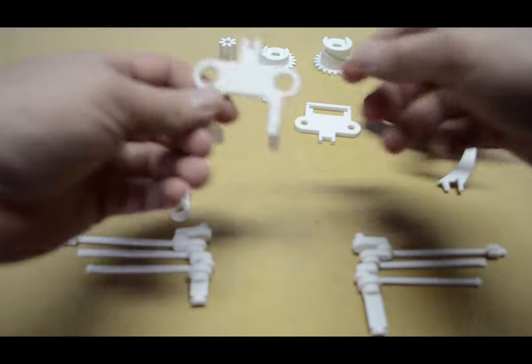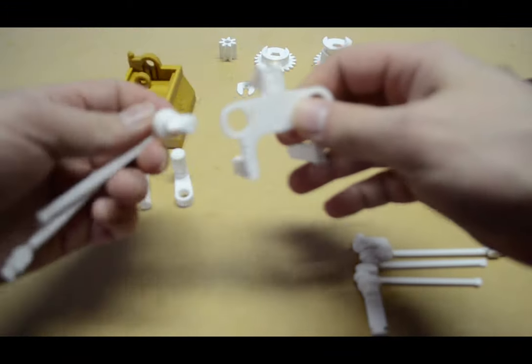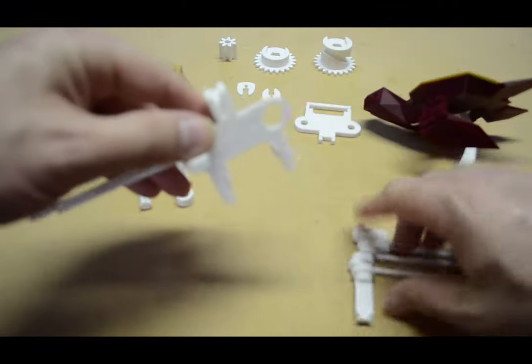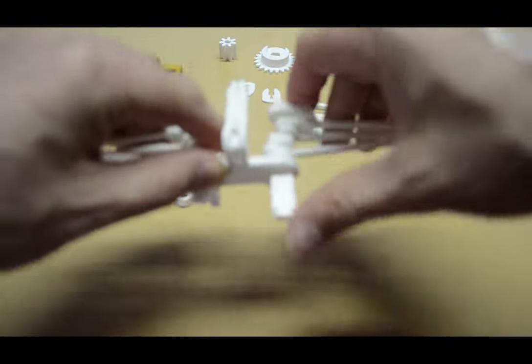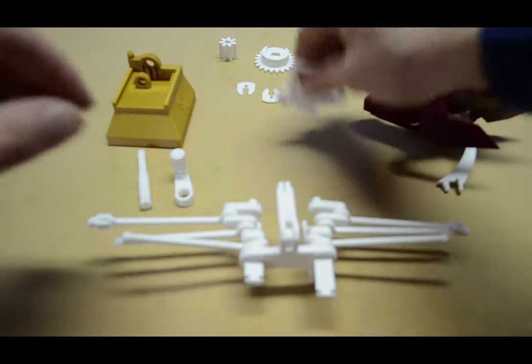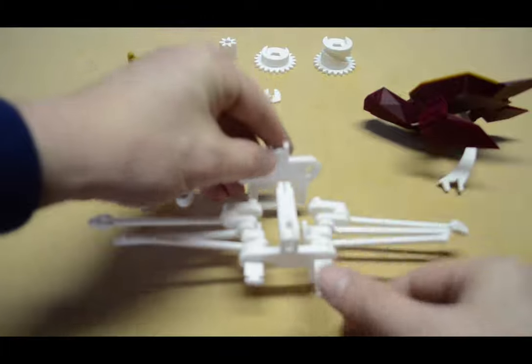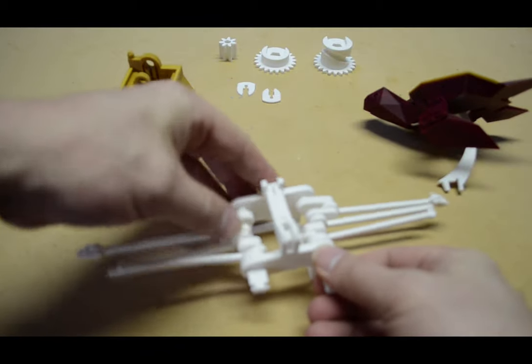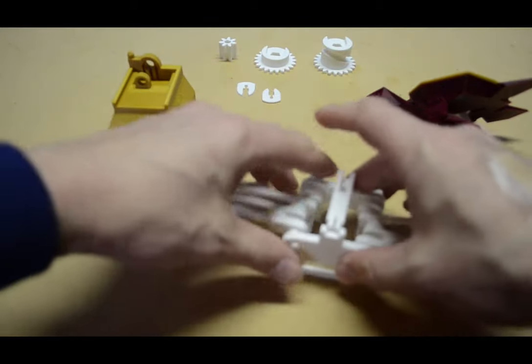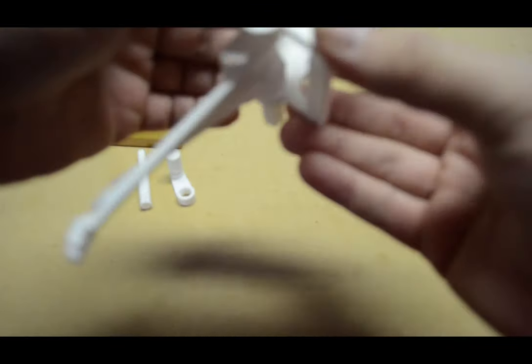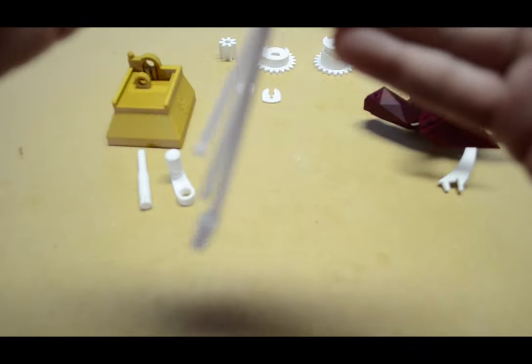So now what we're going to do is the gear system. I'm going to take this piece here. This is one of the gears that goes into here. This is all a crankshaft type system. And we're going to put this piece over here and connect it on the back side.